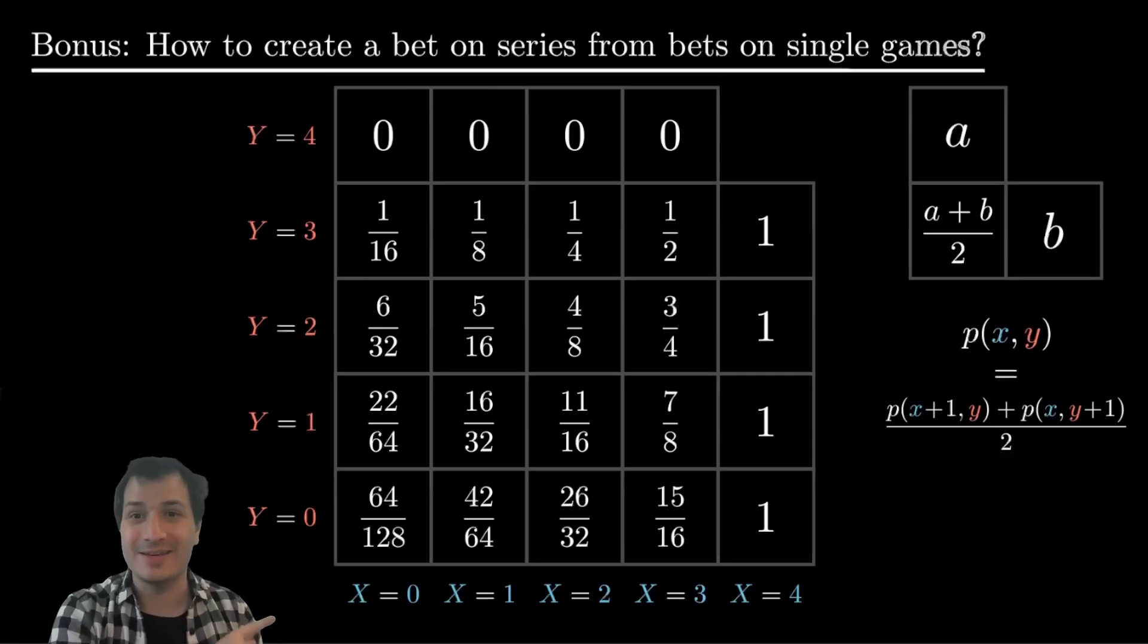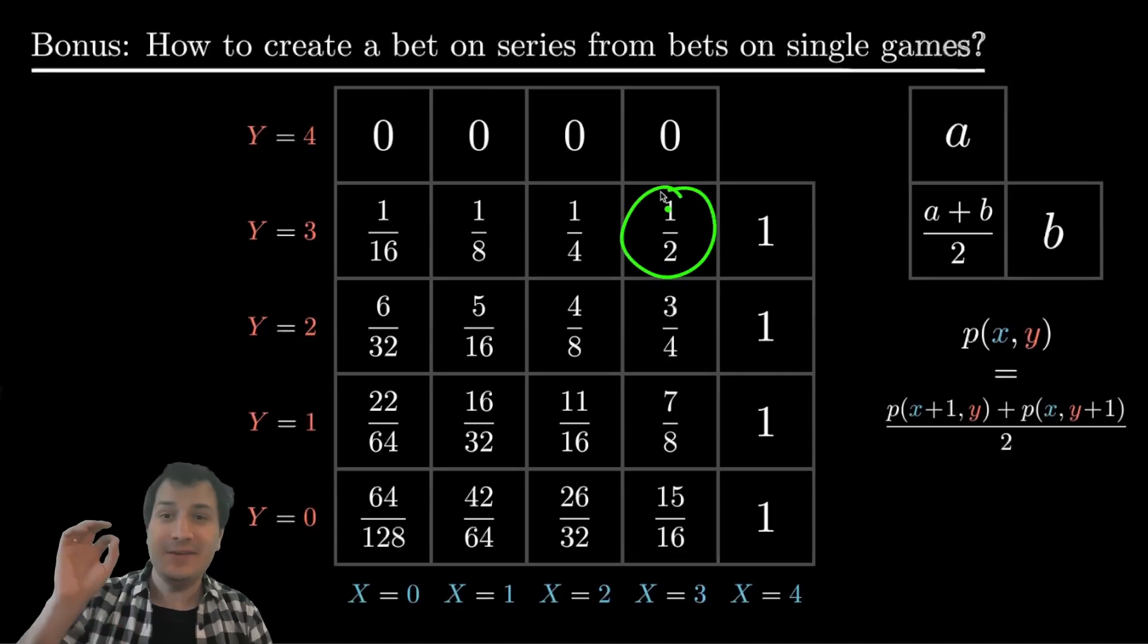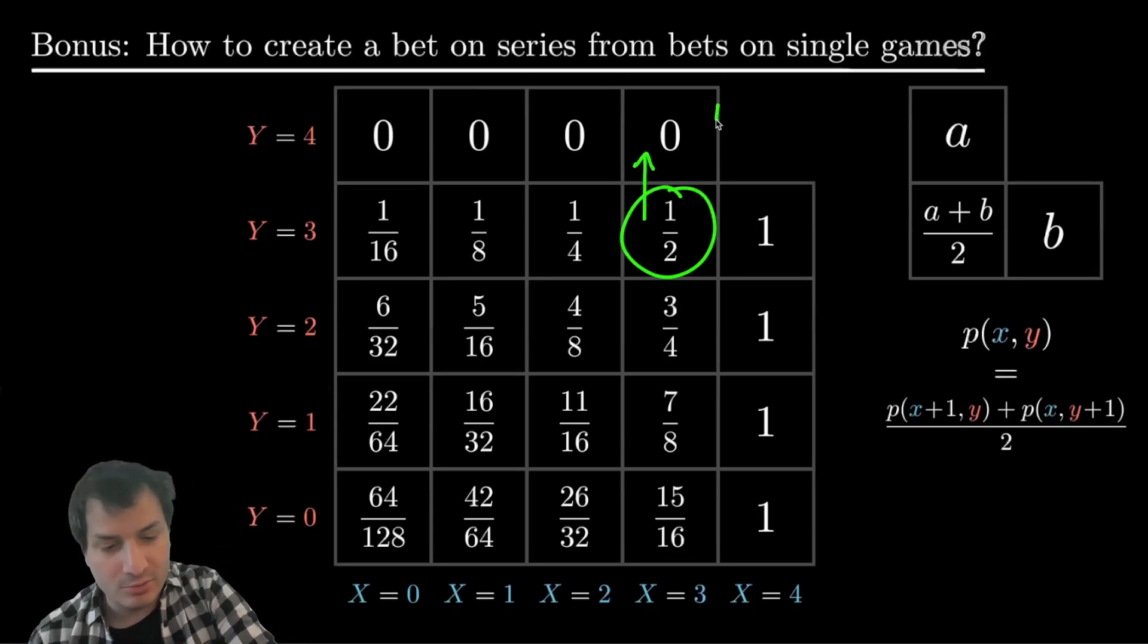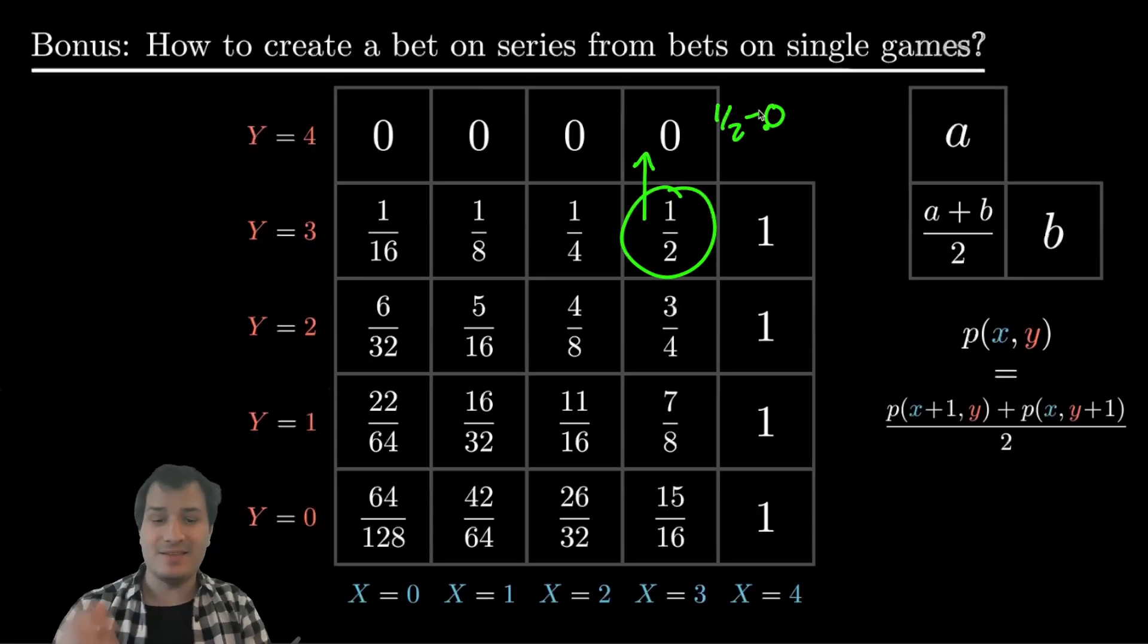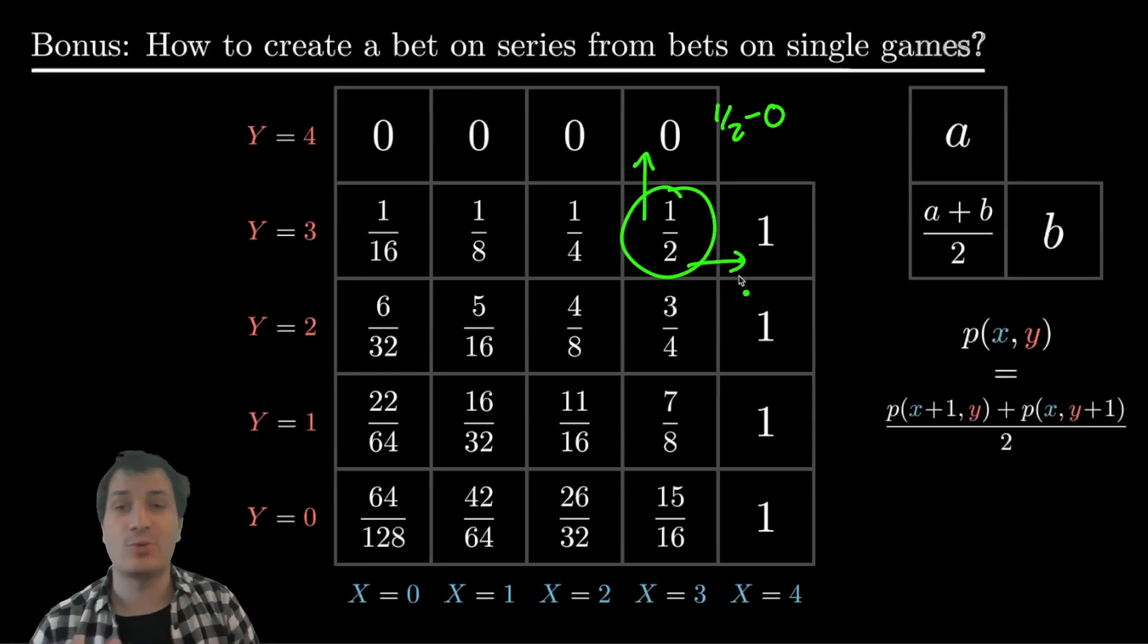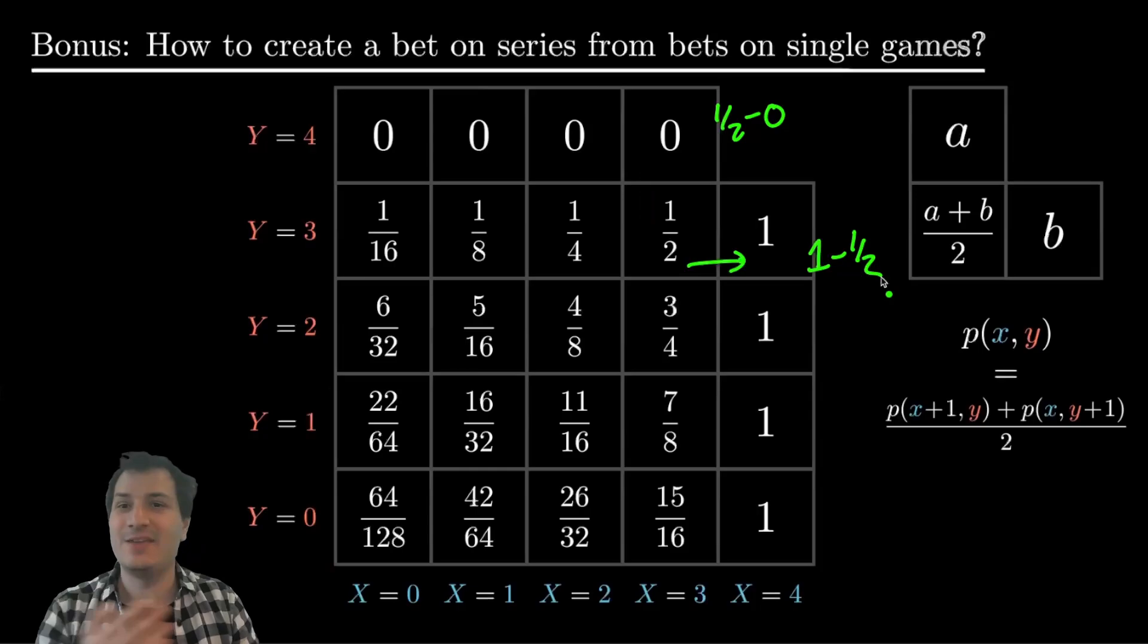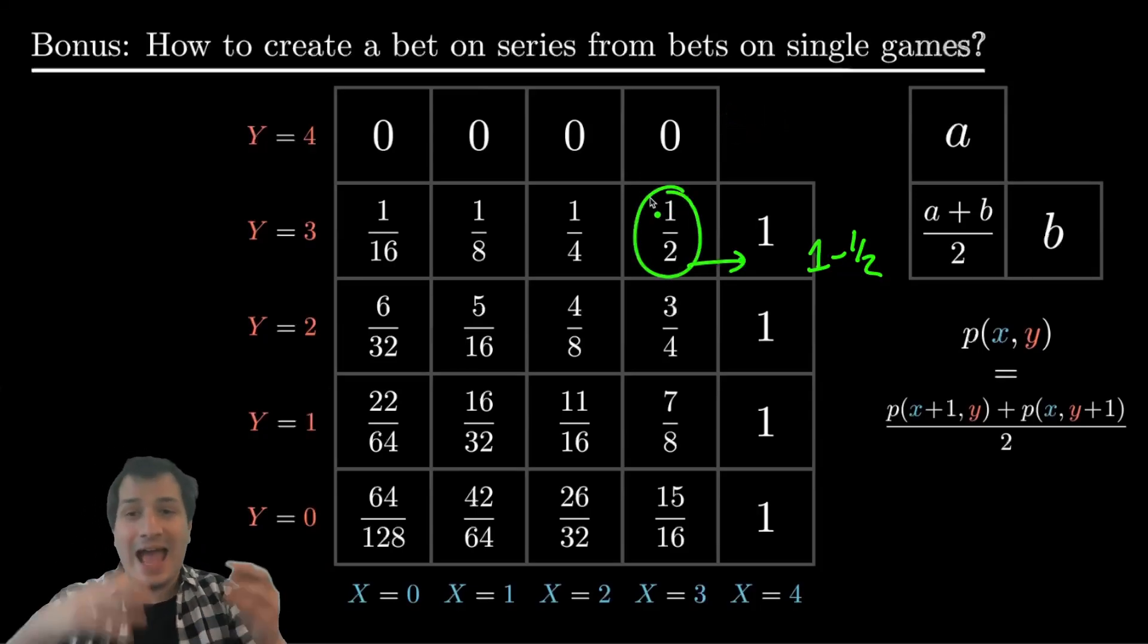That's what makes this a tricky problem. But the answer to this problem is actually contained in this grid of probabilities we already calculated. And it all comes from this key observation that for any given square, the difference between that square and the square above it, so 1 half minus 0, 1 half minus 0, is exactly the same as the difference between that square and the square to its right. So 1 minus 1 half. And of course, this makes perfect sense given our update rule. Each square is the average of these two numbers. So the difference is got to be the same on either side.